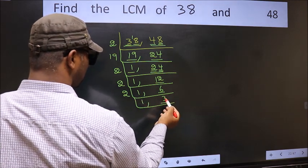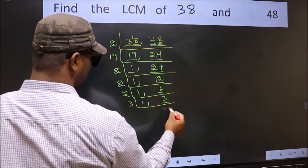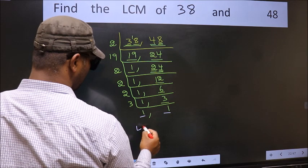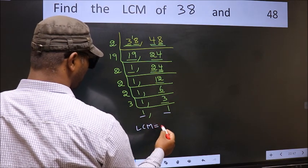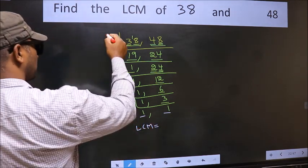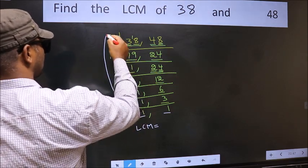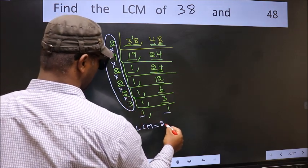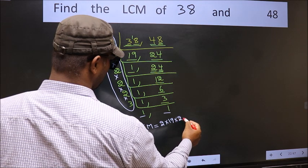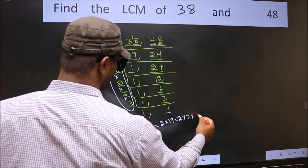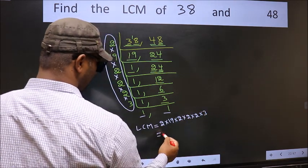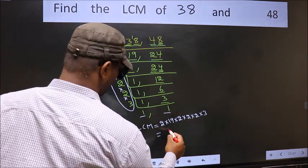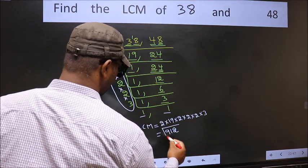Now we have 3. Since 3 is a prime number, 3 times 1 is 3. We got 1 in both places, so our LCM is the product of these numbers: 2 × 19 × 2 × 2 × 2 × 2 × 3. When we multiply these numbers, we get 912 as our LCM.